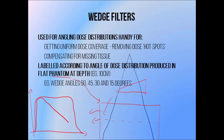In a flat phantom, this results in an angled dose distribution. We can create dose distributions at different angles — normally 60, 45, 30, and 15 degrees in clinical practice. These angles are defined as the angle between the dose distribution on the central axis and the horizontal plane in a profile measured at depth in a flat phantom, normally at a depth of 10 cm.